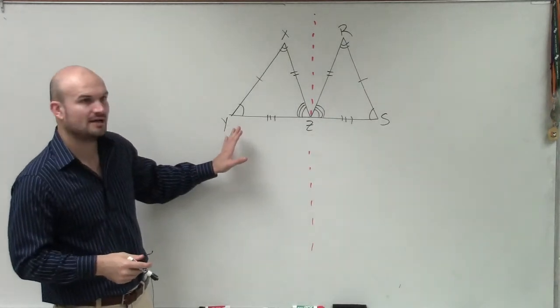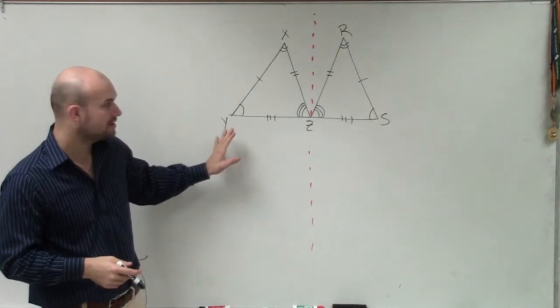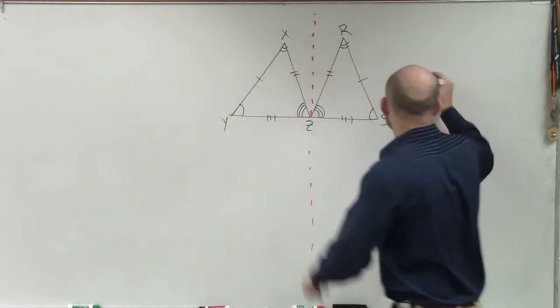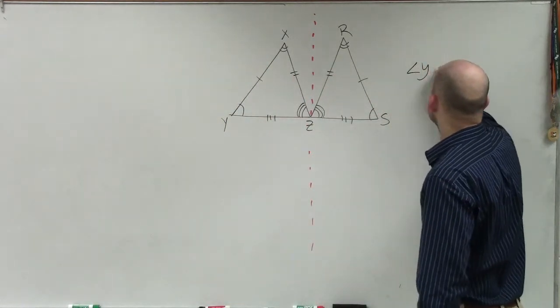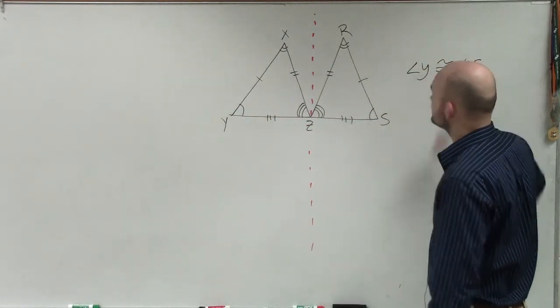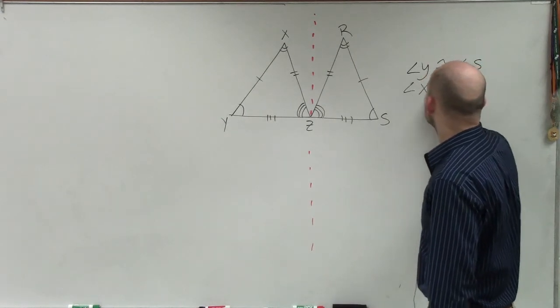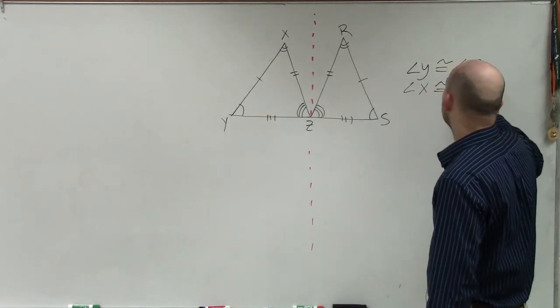So now when I'm looking at what angles are going to be congruent to each other, I could say that my angle y is congruent to angle s. I could say angle x is congruent to angle r.